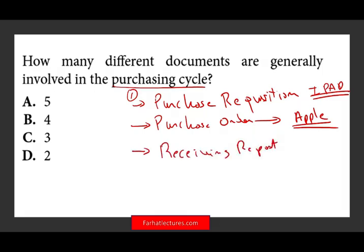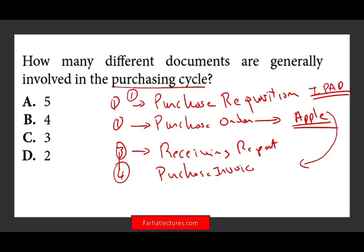So once we receive the iPad, the receiving department would say: here's what we received — an iPad — and they'll have the description, the item number, and all the details. So notice: one, two, three. Are we done yet? No, we still have one more — number four. That fourth document is what Apple invoices us. Apple will send us a purchase invoice asking us to pay the bill. So those are the four documents.